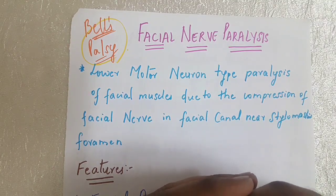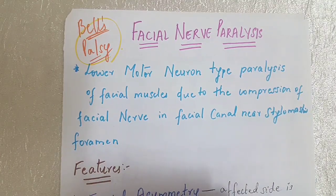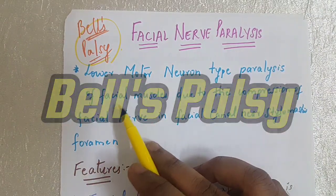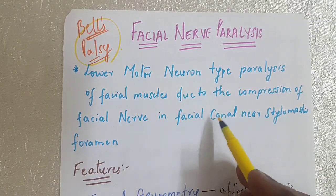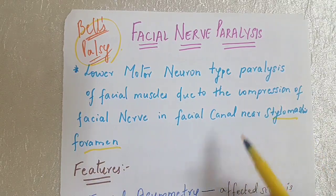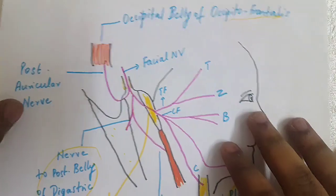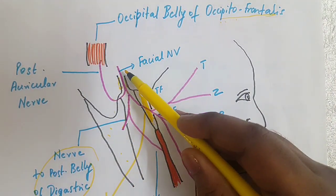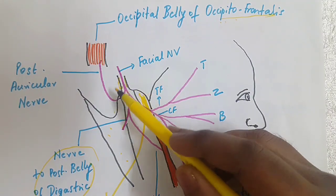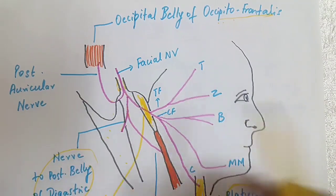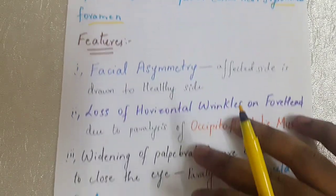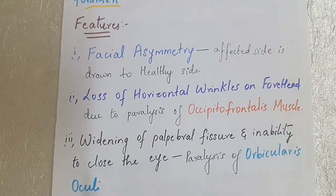Welcome to the channel. In this video we will be discussing facial nerve paralysis, also called Bell's palsy. Facial nerve paralysis is a lower motor neuron type paralysis of facial muscles due to compression of the facial nerve in the facial canal near the stylomastoid foramen. The facial nerve travels from the cranial cavity to the stylomastoid foramen, where it is compressed. The reason for this compression is not fully known but is thought to be due to viral infection.